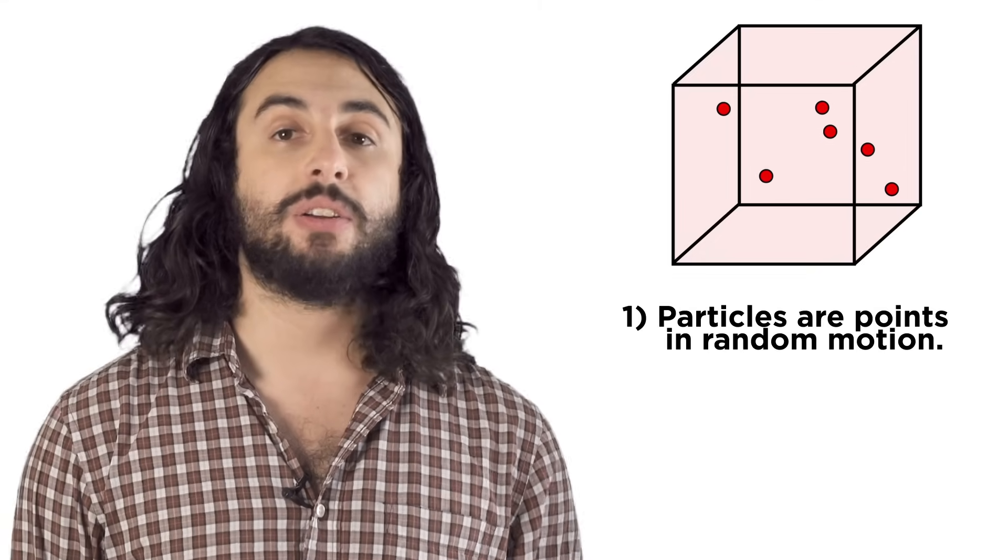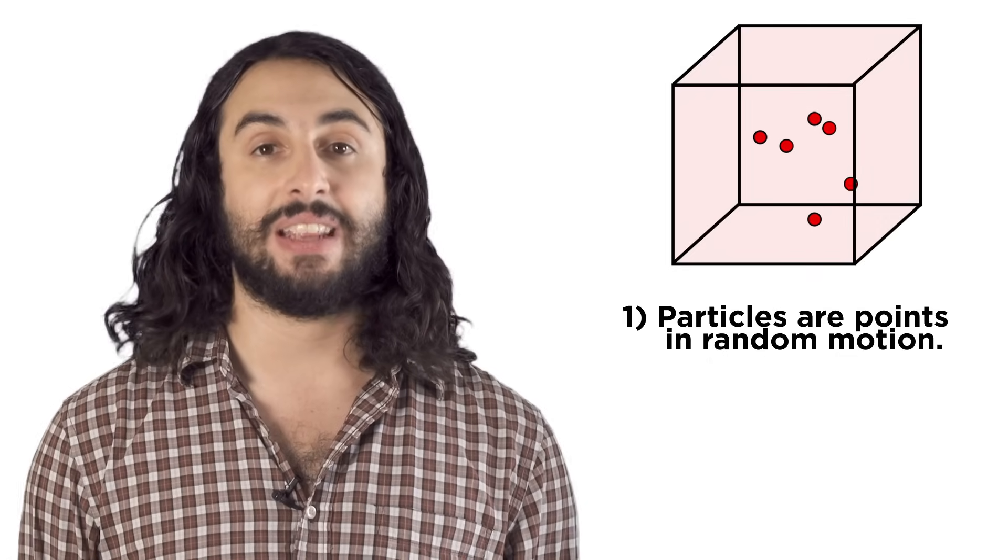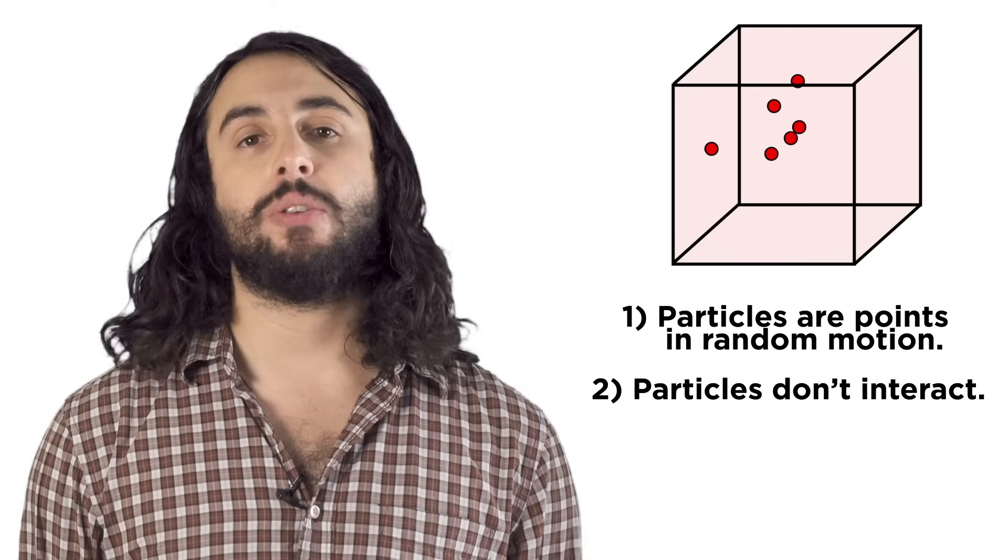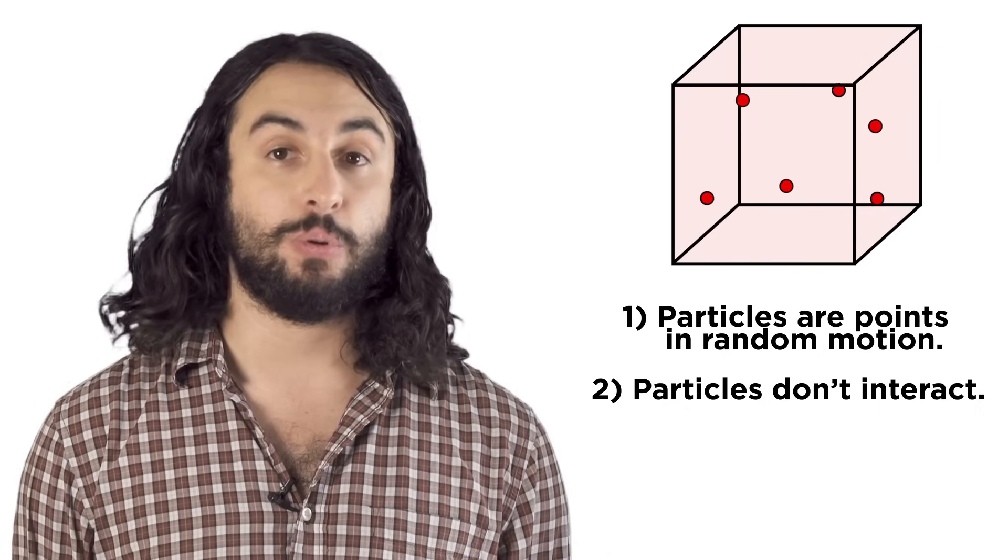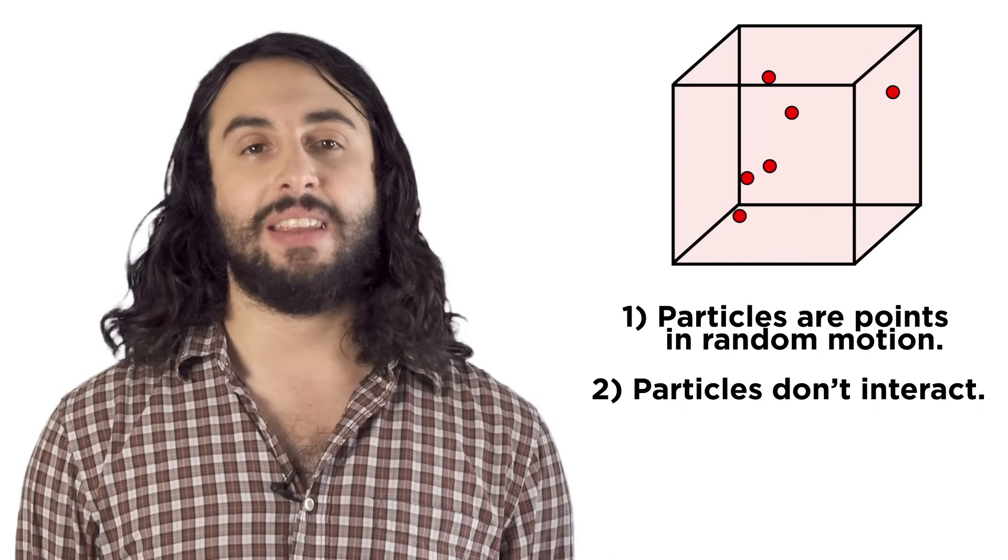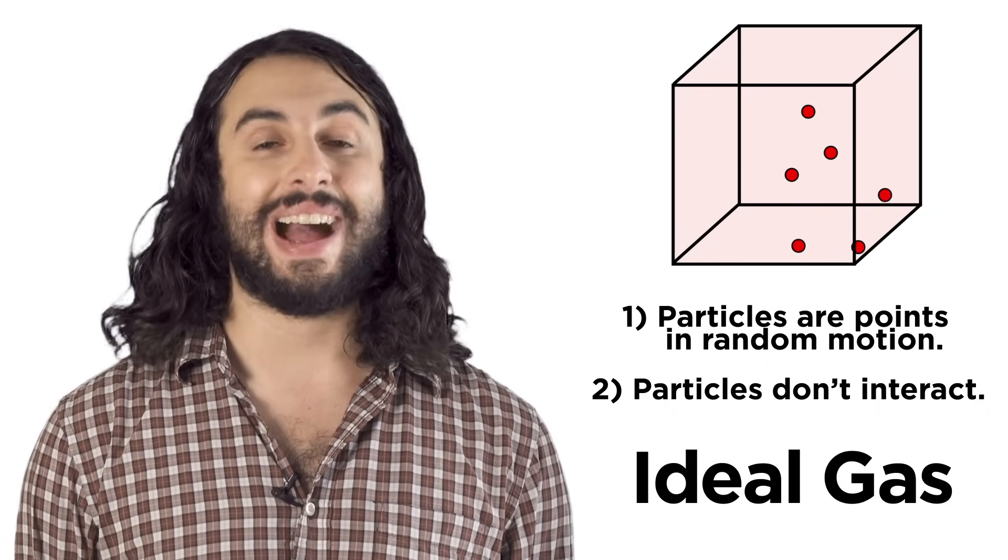Those are that one, particles of a gas are dimensionless points in random motion and the identity of the gas is irrelevant, could be anything, and two, that the particles don't interact apart from elastic collisions, bouncing off one another like balls on a pool table. These things aren't completely true, but they make the math easy and surprisingly accurate, so these kinds of samples are called ideal gases.